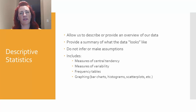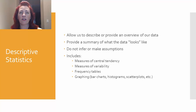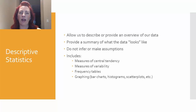So to start off, what are descriptive statistics? This is an area of statistics that allows us to describe or provide an overview of our data. We use these numbers to provide a summary of what our data actually looks like. However, we cannot use these numbers to make inferences or assumptions about the data, as we must use inferential statistics to do that. There are some great tools within descriptive statistics, not only including the measures of central tendency we'll cover today, but also measures of variability, which help us describe how spread out our data is, and also frequency tables and graphing options, which give us a pictorial representation of what the data looks like, which is especially important for categorical variables.